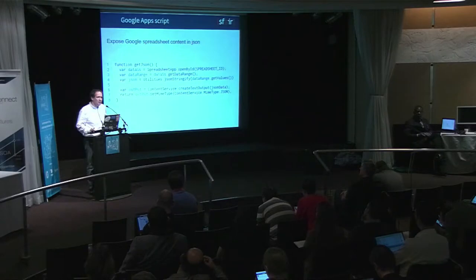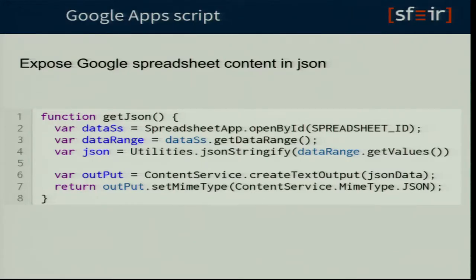I mentioned Google Apps Script earlier. Just to show you how powerful it is: if you want to take the content of a Google Spreadsheet and expose it as JSON, all you have to do is five lines of JavaScript in Google Apps Script. That's the fastest way I know to expose JSON content on the internet. You get an ugly URL, but you get your content, with security and a bunch of other stuff managed for you.